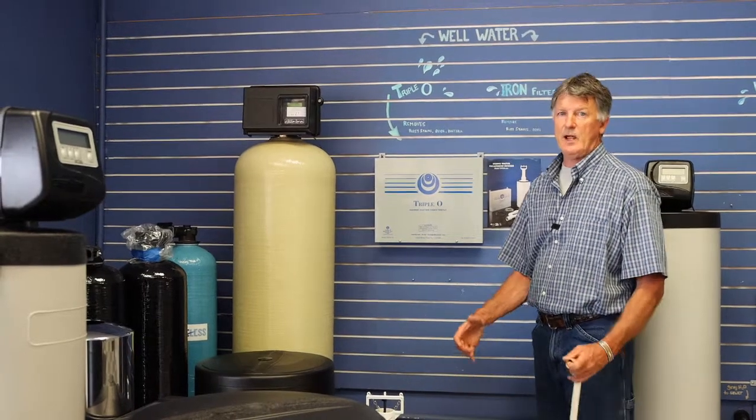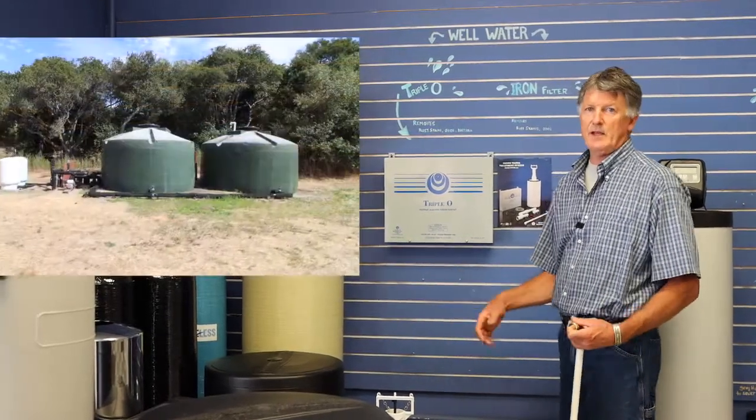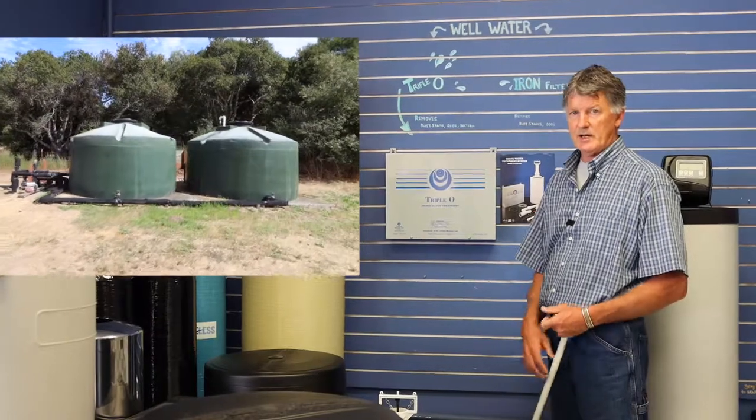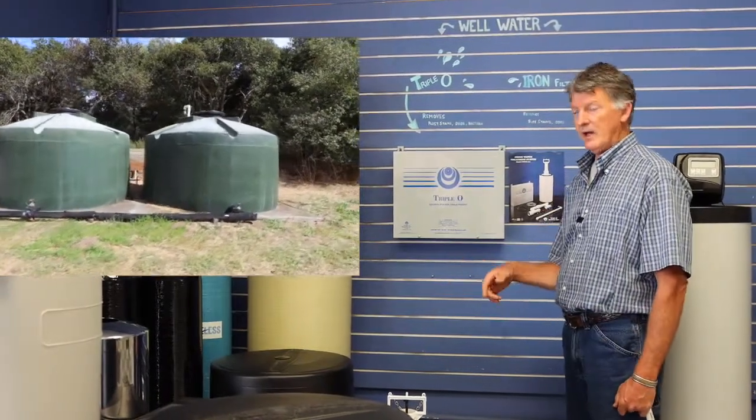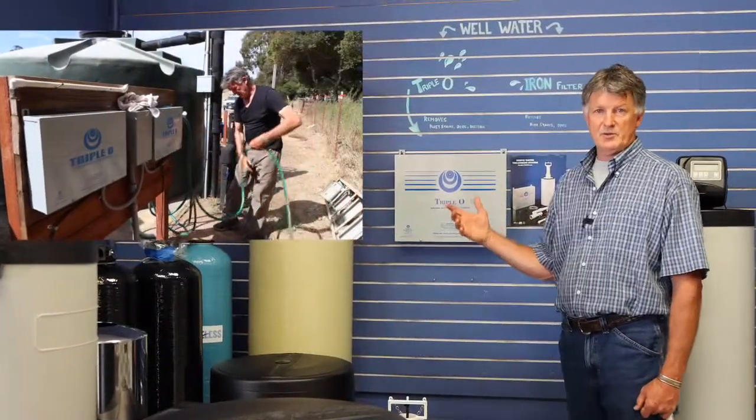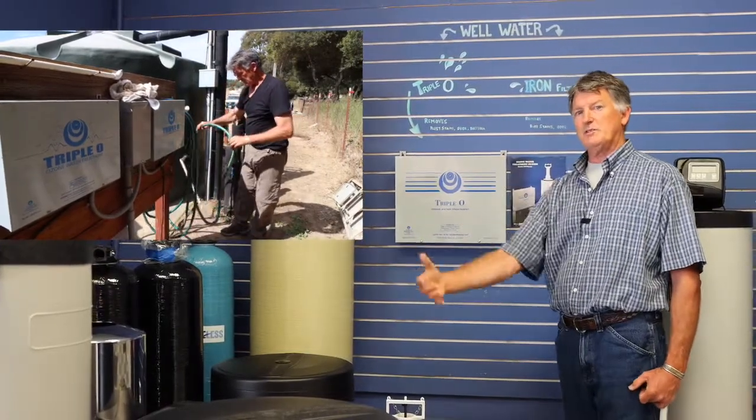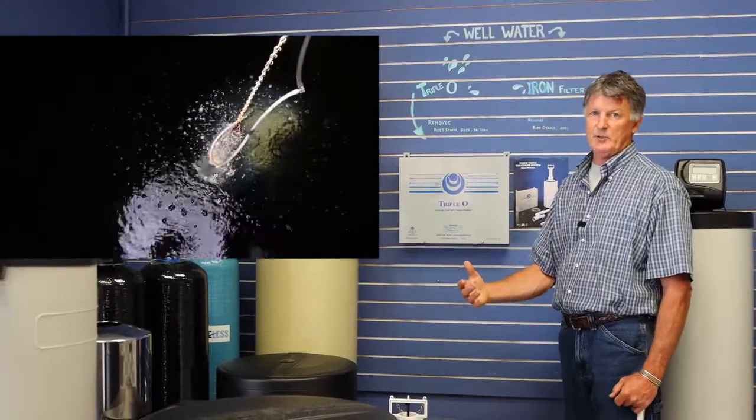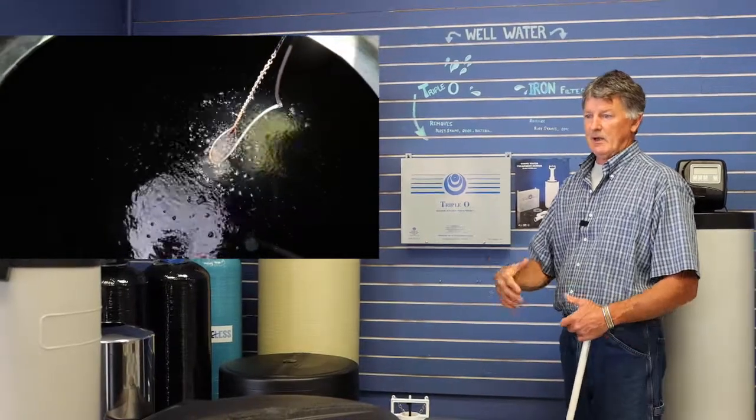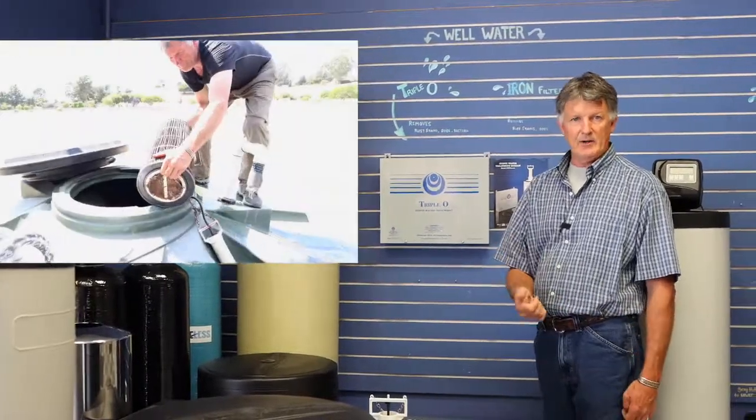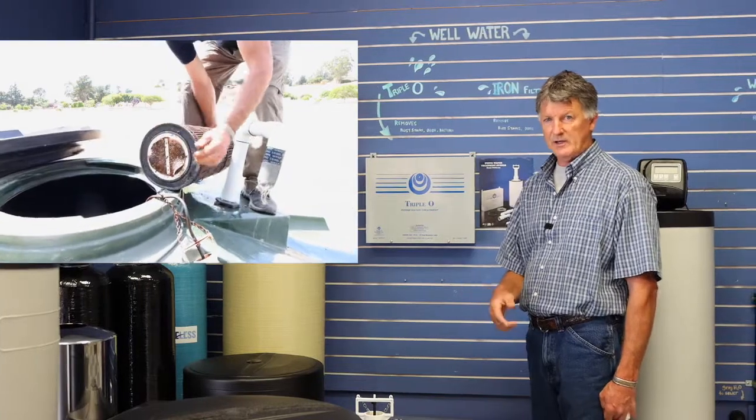If you're on a private well and you have a storage tank, say a 5,000 or 10,000 gallon storage tank, a nice system to put in would be an ozone system. The brand we like is Triple O, but it's an ozone system that oxygenates the water. So the minerals that would be oxidated would be like iron, manganese, hydrogen sulfide.